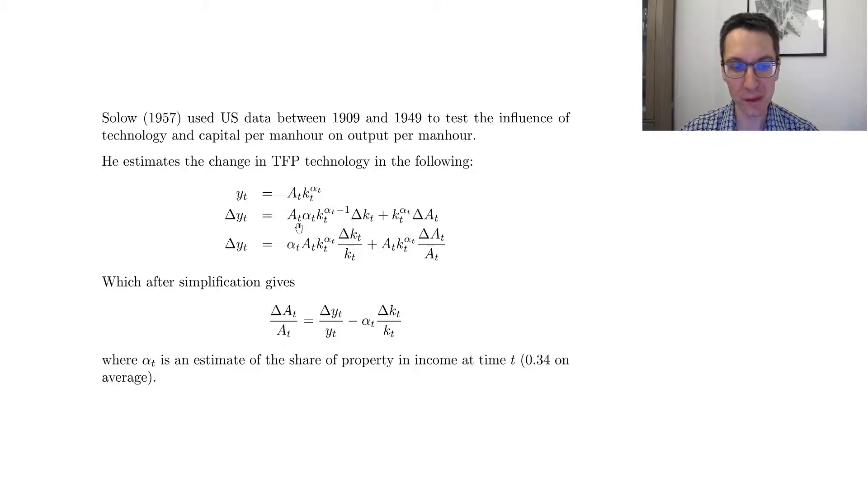And then note what he does. So you can divide by K_t here and multiply by K_t here, divide by A_t here and multiply by A_t in front, and you get this form, where here, if you noticed, this A_t K_t to the alpha_t is Y_t, and this is Y_t as well. So then the only step that we have to do is divide by Y_t everywhere, and isolate delta A_t over A_t.